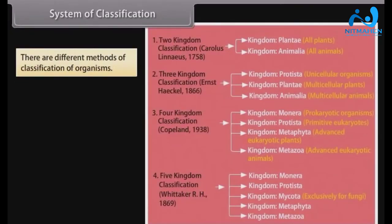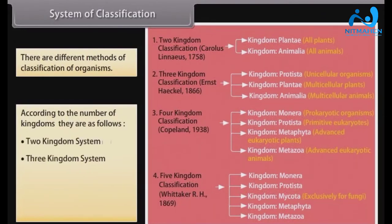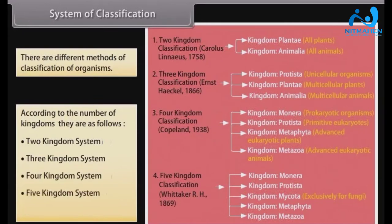There are different methods of classification of organisms according to the number of kingdoms. They are as follows: two kingdom system, three kingdom system, four kingdom system, five kingdom system, and six kingdom system.